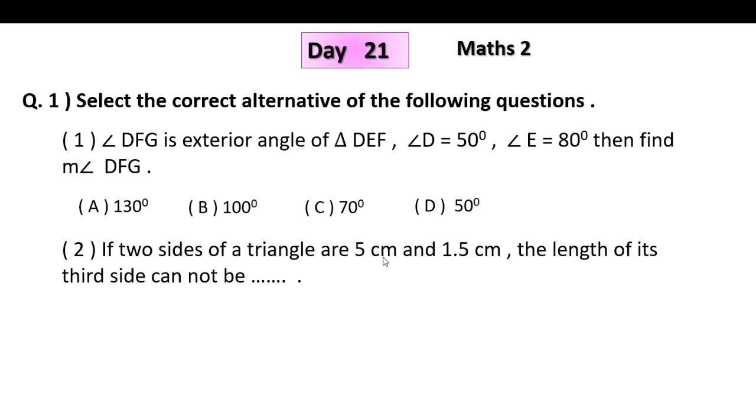Second, if two sides of triangle are 5 cm and 1.5 cm, the length of its third side cannot be... The options are 3.7 cm, 4.1 cm, 3.8 cm and 3.4 cm. In a triangle, the sum of any two sides must be greater than the third side. If we take 3.4 cm and 1.5 cm, their sum is 4.9, which is less than 5. This means 3.4 cannot be the third side. The answer is option D, 3.4.